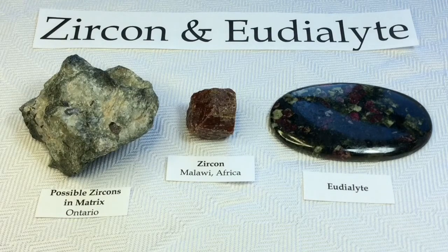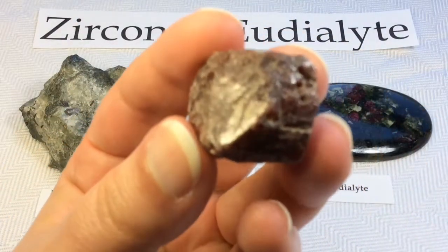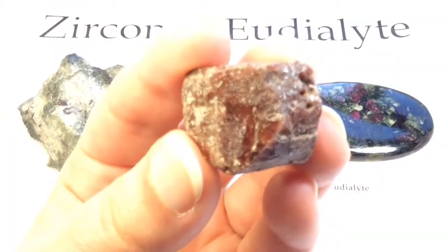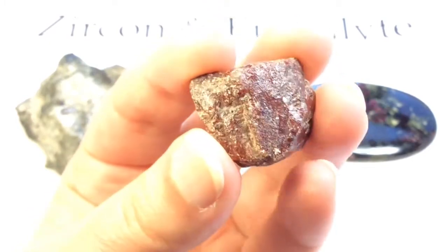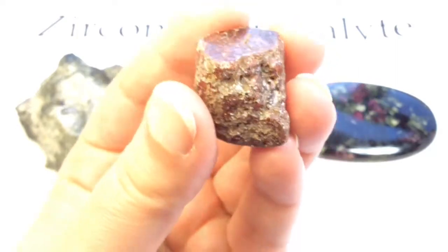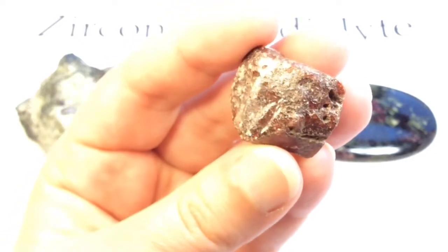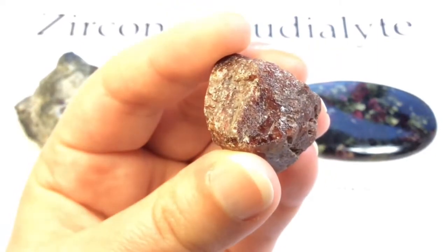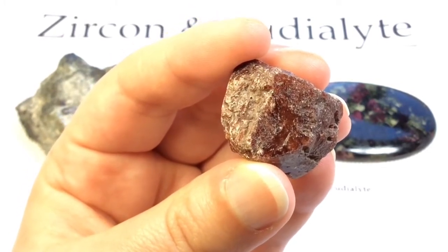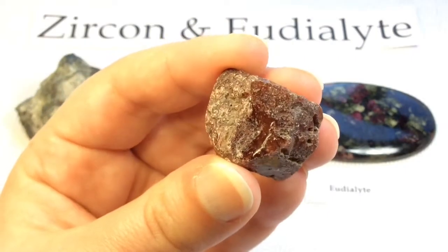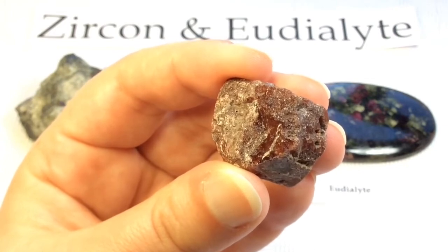My first specimen is a zircon from Malawi, Africa, and it certainly does have a red tinge to it — gorgeous and quite large for a zircon. Large zircons are very rare. Their average size in granite rocks is about 0.1 to 0.3 millimeters, super small. But they can also grow to sizes of several centimeters, especially in mafic pegmatites and carbonatites.